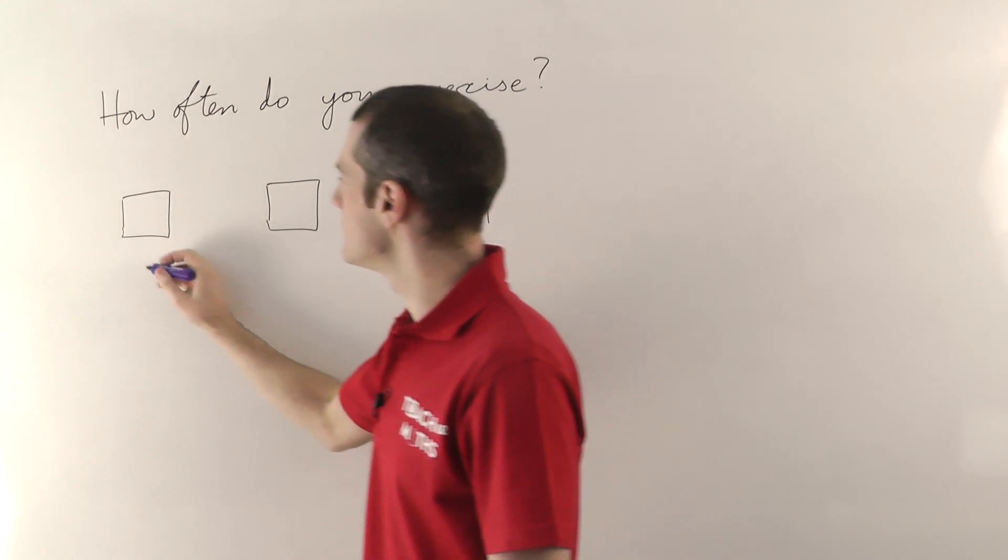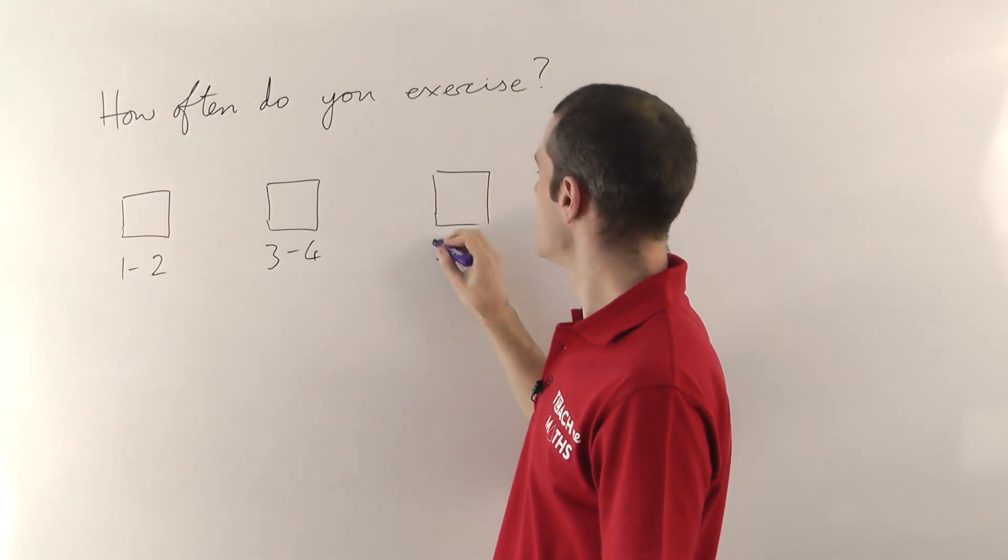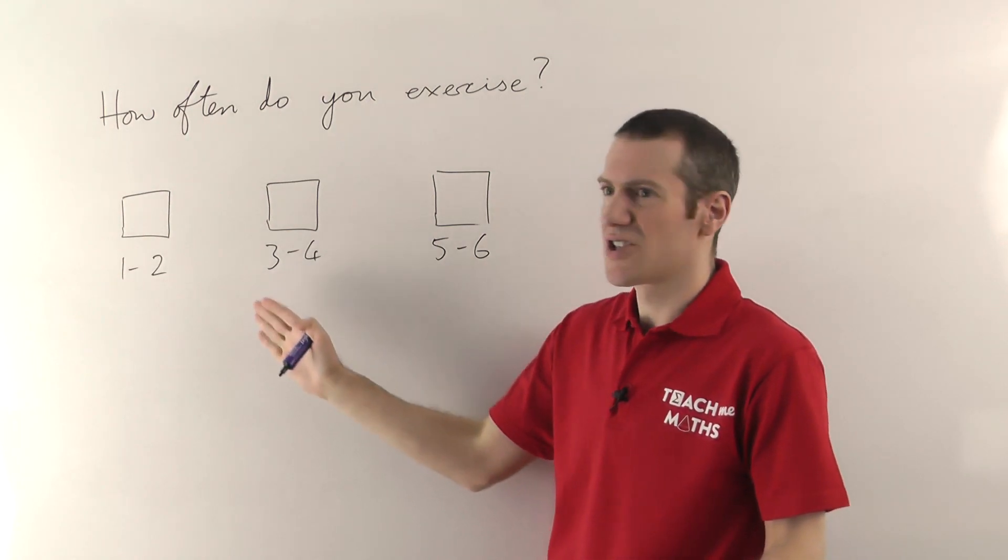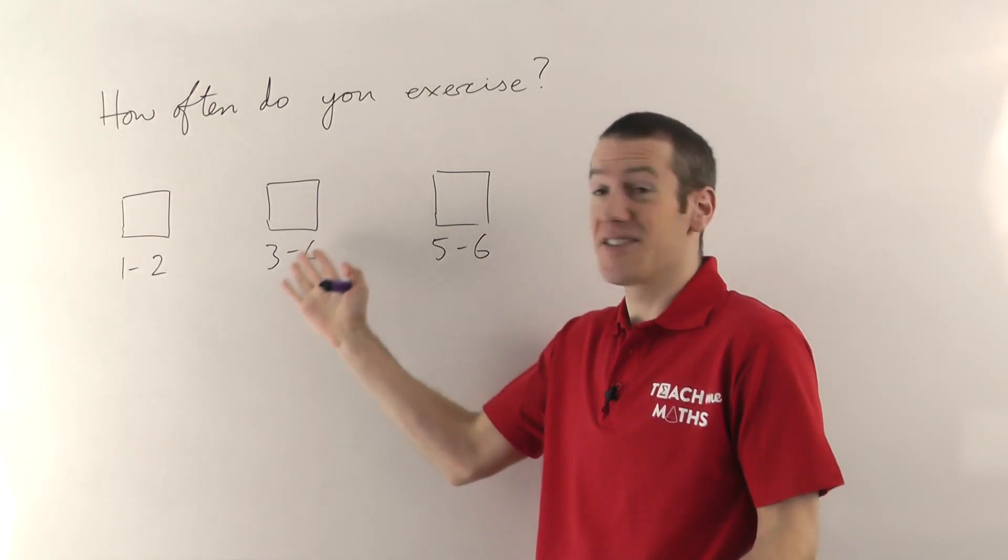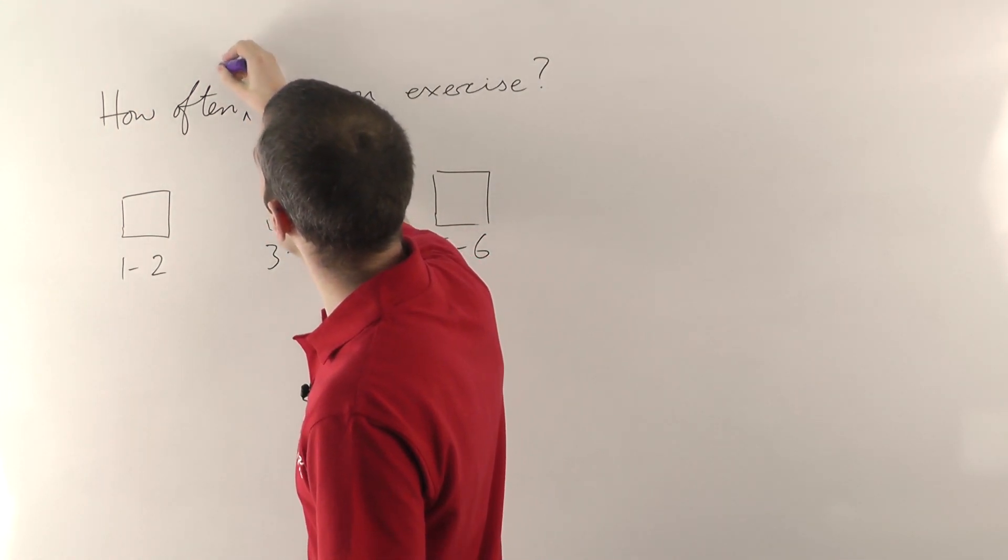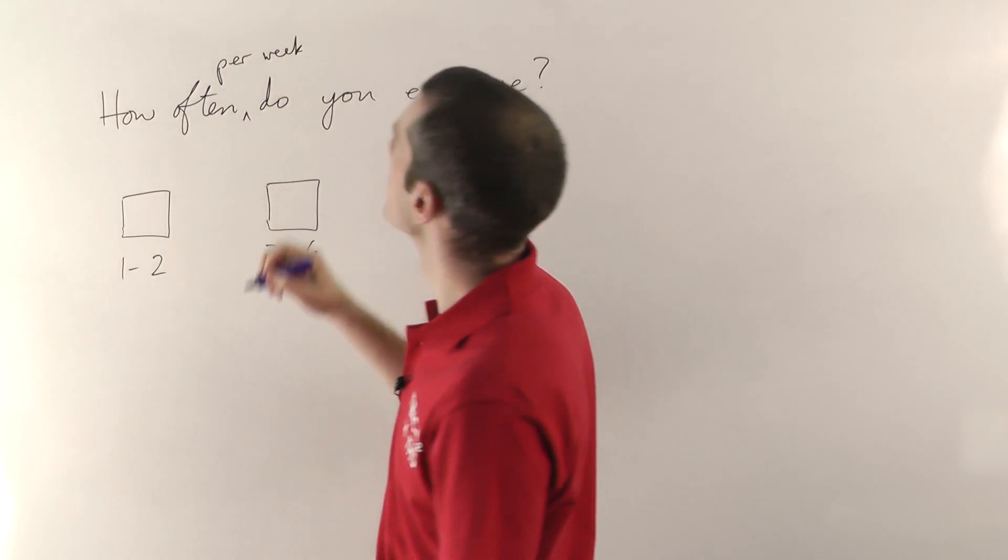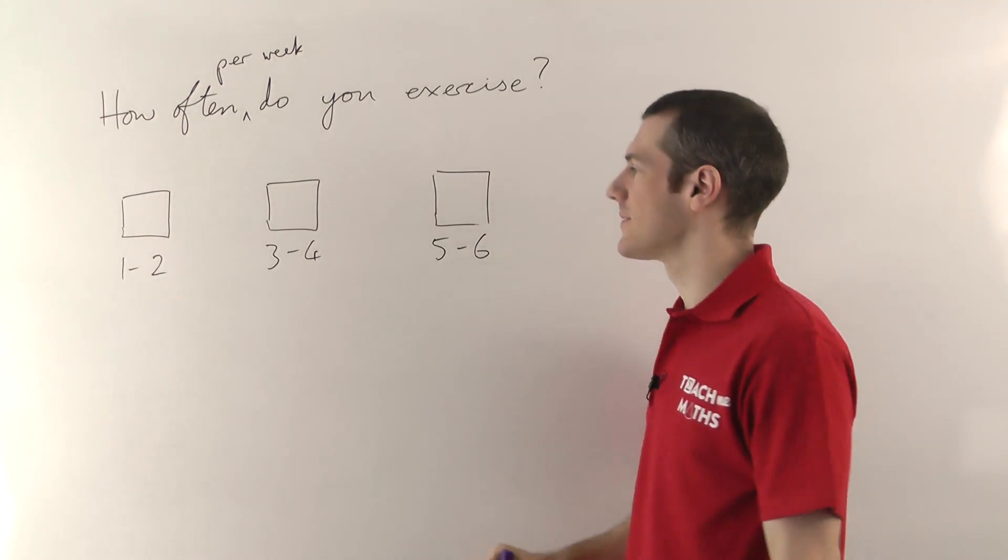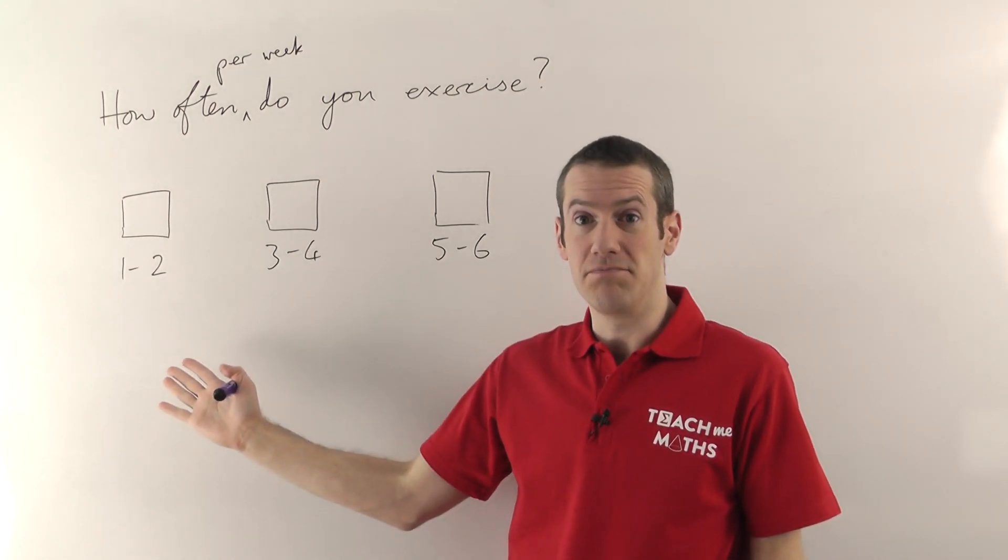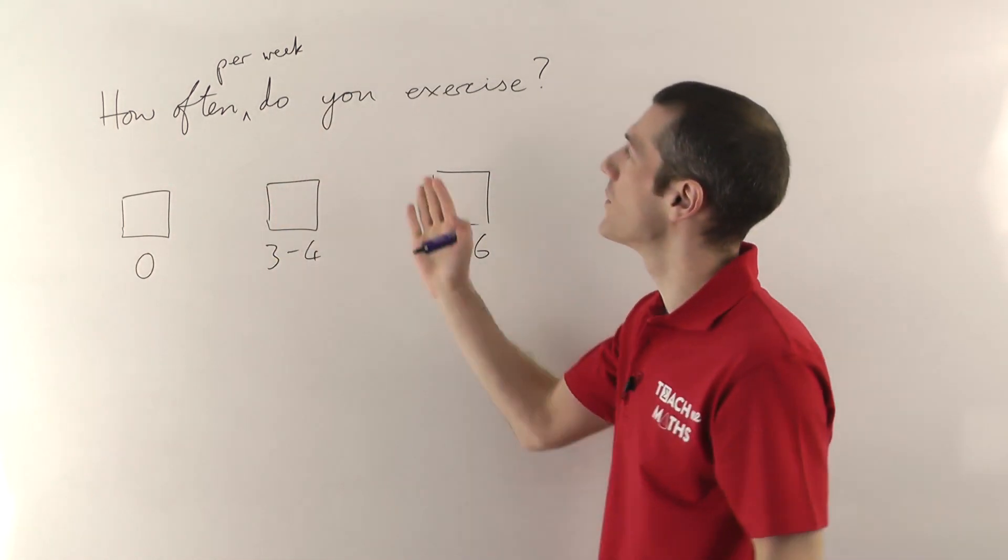Rather than having words like that, we want to use numbers. But in terms of how often, you must specify the time period. So I can't just say 1 to 2, 3 to 4, 5 to 6, etc., because how often do you exercise 1 to 2 times a week, a month, a year? It doesn't say. So you must specify the time period. So you might say how often per week do you exercise? And then it makes a bit more sense. Although again I've got a couple of problems here. What if somebody doesn't exercise at all? You need to make sure they can tick a box. So you need to start with zero really here. How often per week do you exercise? No times.